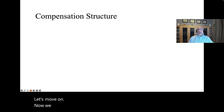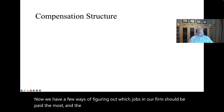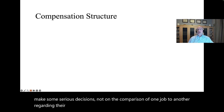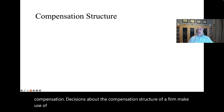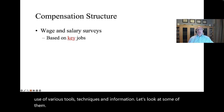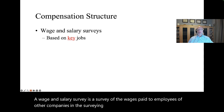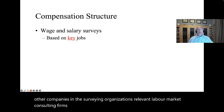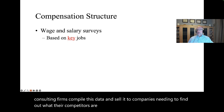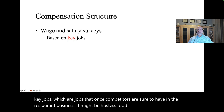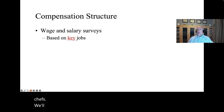Now that we have ways of figuring out which jobs should be paid the most and least, we need to make decisions about actual dollars of compensation. A wage and salary survey is a survey of wages paid to employees of other companies in the surveying organization's relevant labor market. Consulting firms compile this data and sell it to companies needing to find out what competitors are paying. The first step is to select key jobs — jobs competitors are sure to have, like hostess, food server, and chef in the restaurant business. Then determine the relevant labor market: McDonald's has a very local relevant labor market for entry-level jobs, while university faculty use a worldwide market.